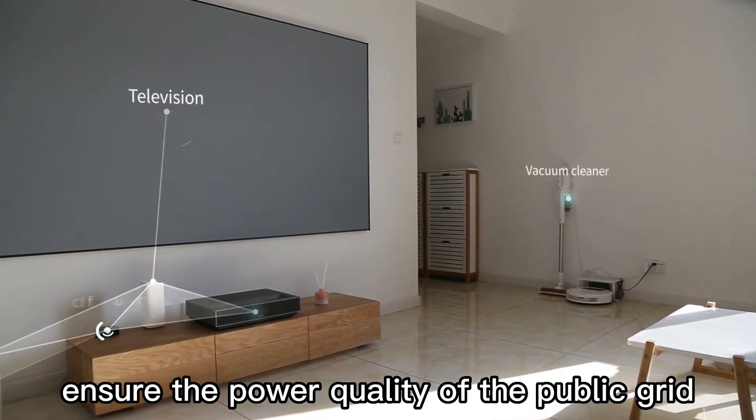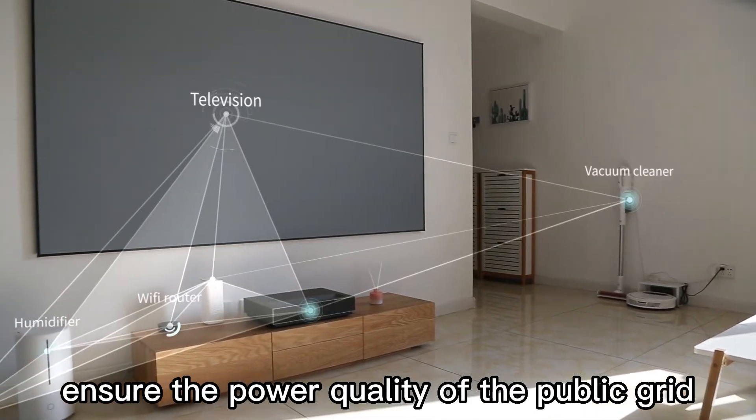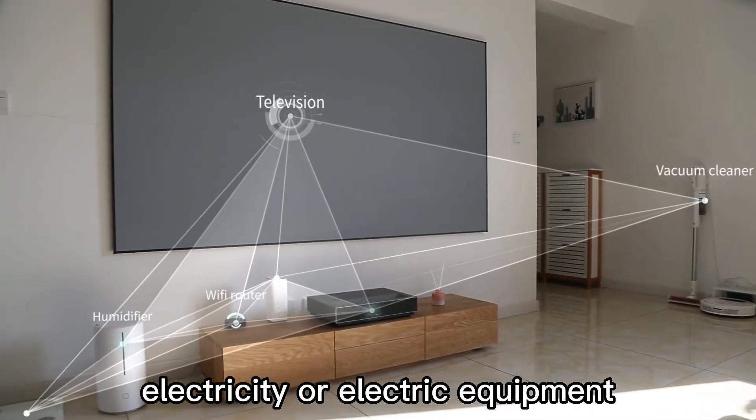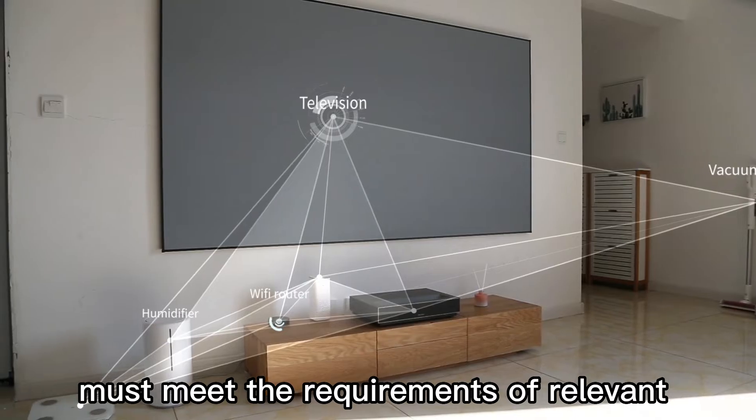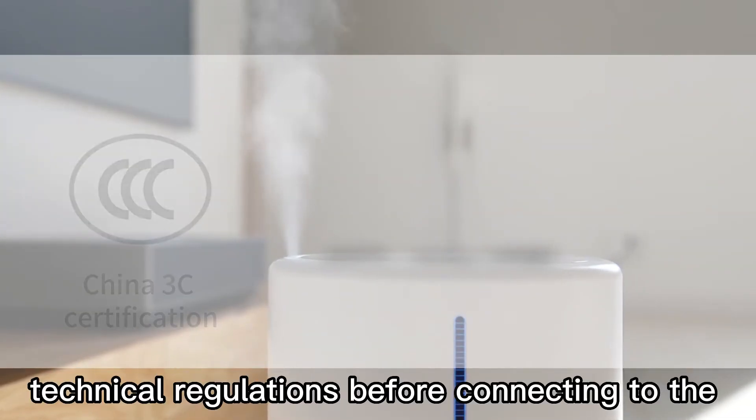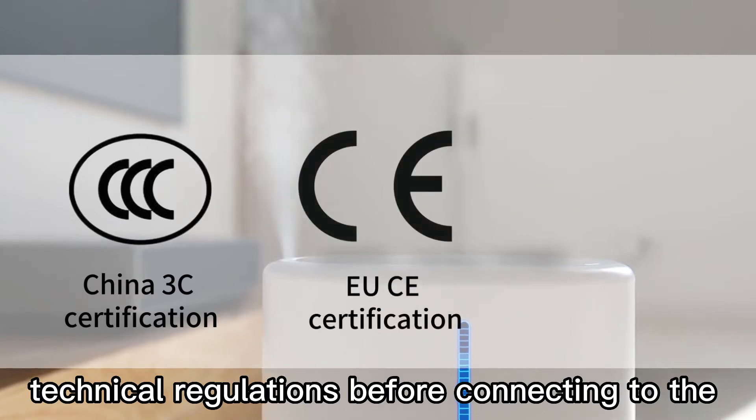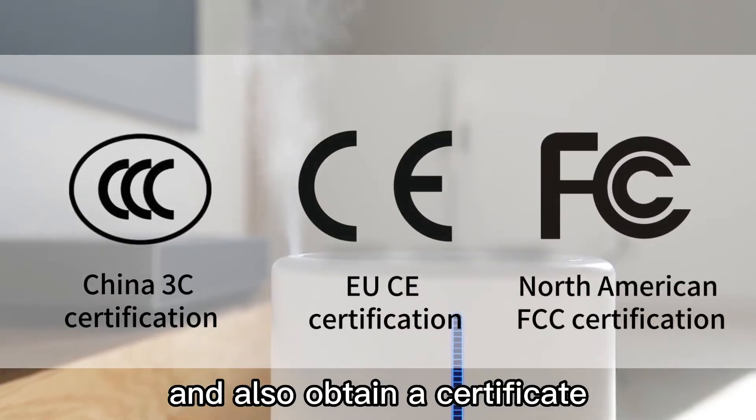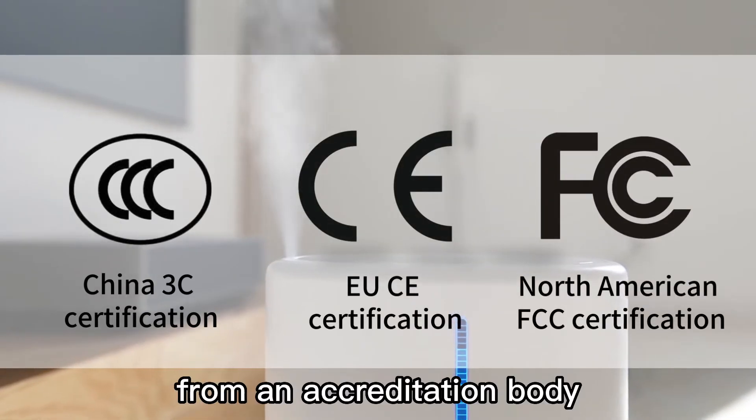In order to ensure the power quality of the public grid, electricity or electrical equipment must meet the requirements of relevant standards and technical regulations before connecting to the grid and also obtain a certificate from an accreditation body.